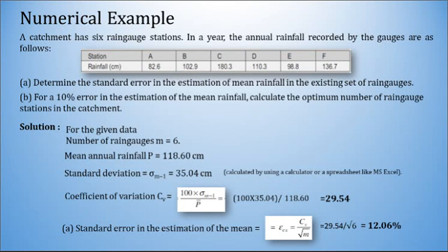Here an example of a catchment is given: a catchment has six rain gauge stations. In a year, the annual rainfall recorded by the gauges are as follows. There are six rain gauge stations A, B, C, D, E, F of which the annual rainfall is given as rainfall in centimeters. For A it is 82.6, B is 102.9, C is 180.3, D is 110.3, E is 98.8, and F is 136.7. First question is determine the standard error in the estimation of mean rainfall P bar in the existing set of rain gauges. Second, for a 10 percent error in the estimation of the mean rainfall, calculate the optimum number of rain gauge stations in the catchment.